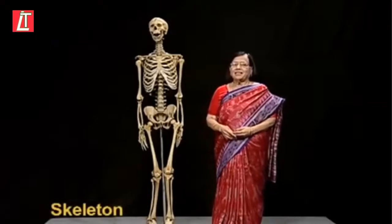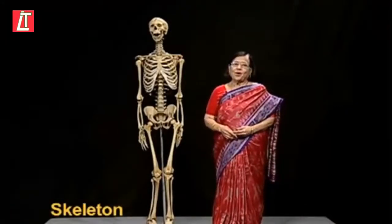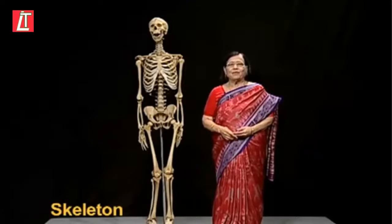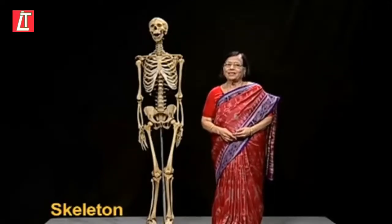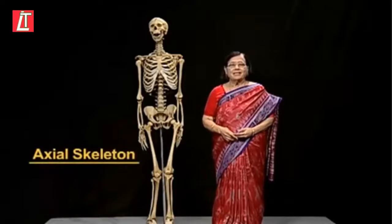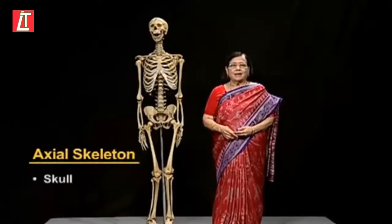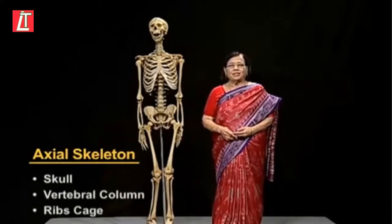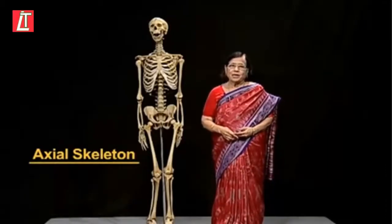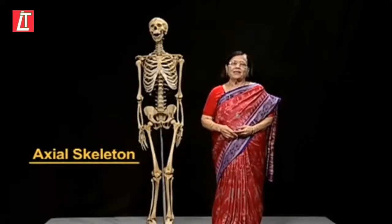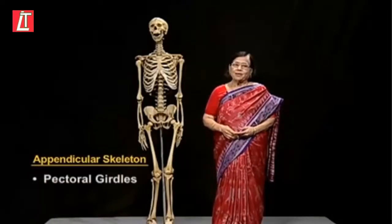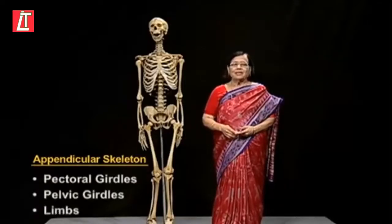Children, we have reached near the skeleton and I am quite excited to see all the bones in one vision in one go. I am sure you are equally interested to know about the placement of these bones in our body. As you know, the skeleton has two main divisions: axial skeleton, which includes the skull, the vertebral column, and the ribcage; and the other division is appendicular skeleton, which includes pectoral girdle, pelvic girdle, forelimbs, and hind limbs.